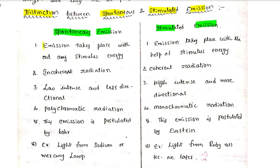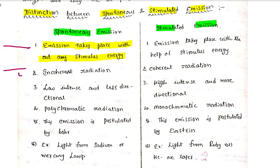First point: spontaneous emission takes place without any stimulus energy. For example, consider two energy states: E1 and E2. E1 is the ground state and E2 is the higher energy state, also called the excited state.